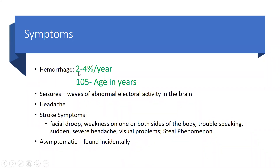When we detect an AVM that's unruptured, there's about a 2 to 4 percent chance it can hemorrhage in one year. If you want to think of it simply: if you're 15 years old and an AVM is detected, there's a 90 percent chance it can rupture in that child's lifetime. If you're 90 years old, there's about a 15 percent chance. You can see the difference that age makes in decision-making with AVMs. In general, when you're younger, we tend to be more aggressive.